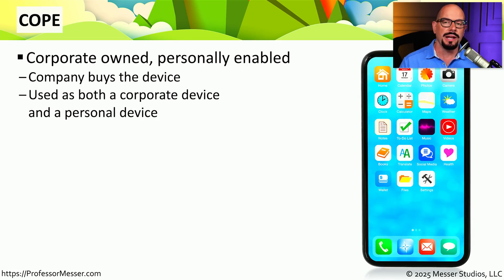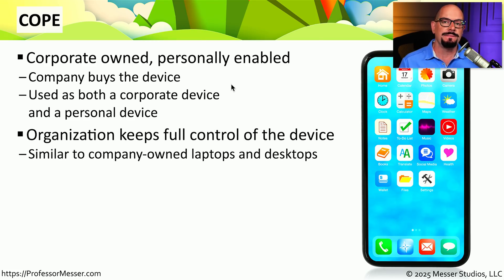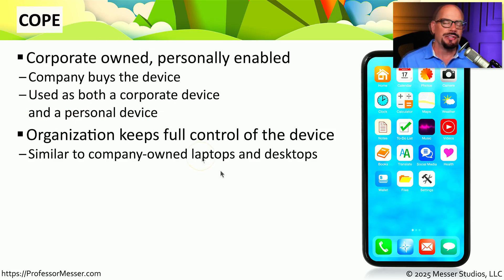Some organizations don't allow user phones to be used inside of the company. Instead, the company will provide the phones through COPE — Corporate-Owned, Personally-Enabled. The company purchases the phone, assigns it to a user, and manages it as a corporate device. Although the corporation has full control of that device, in many organizations they allow the user to use it as a personal device as well. Since the company purchased the phone, they have complete control over it and manage every aspect of how that device is managed.